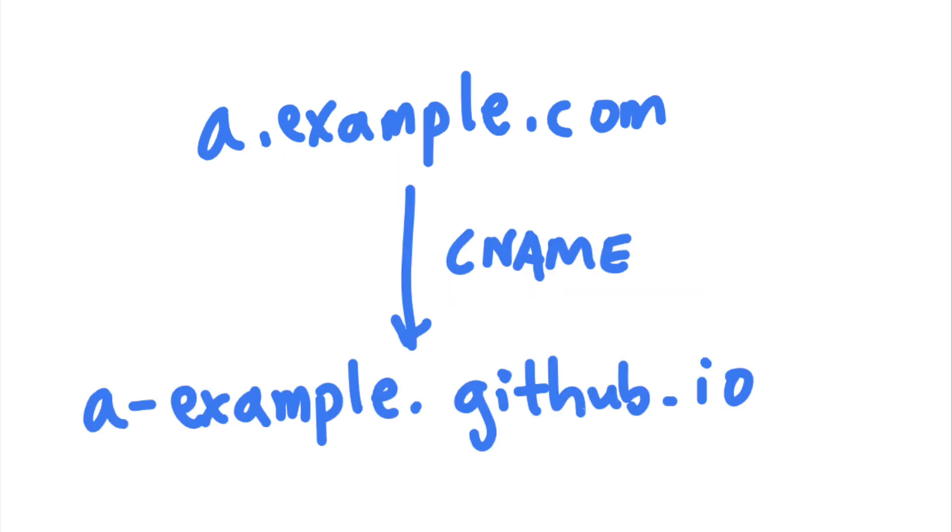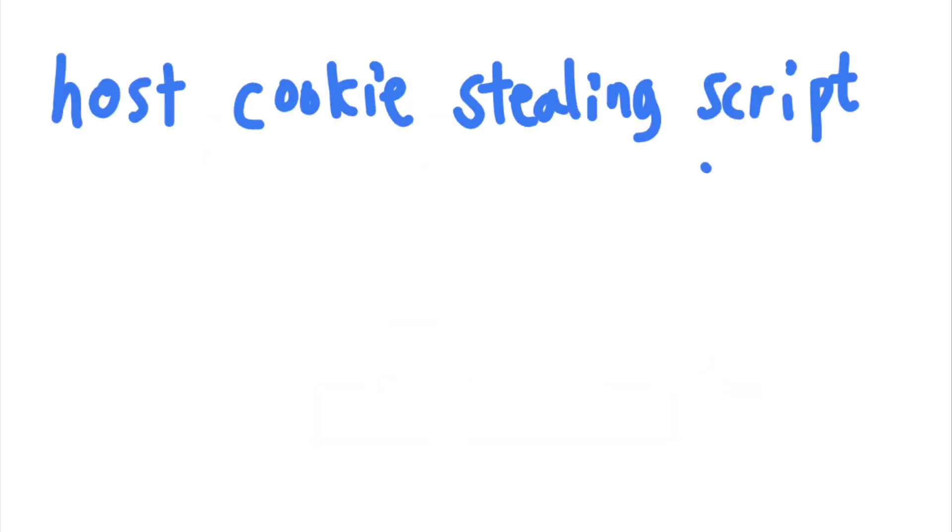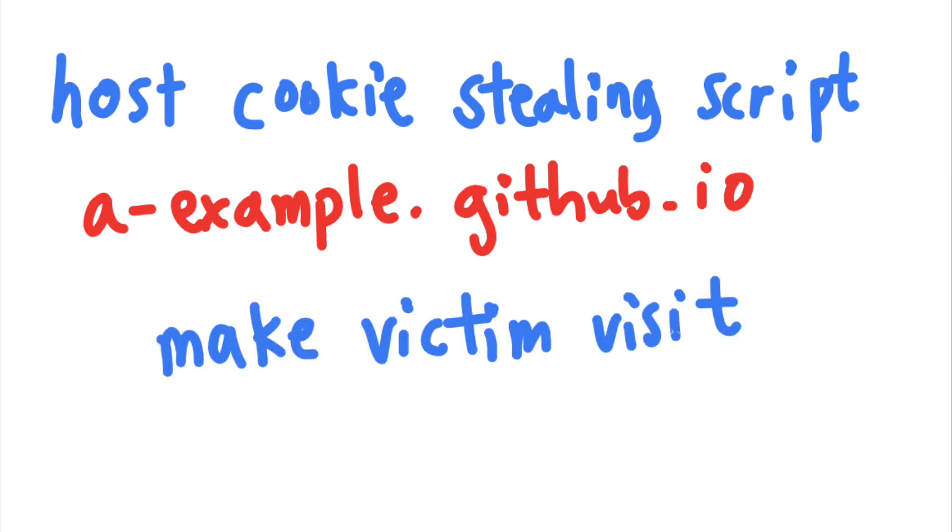In this case, attackers can take over the GitHub page and host a malicious script there to steal session cookies. They can then trick users into accessing the compromised subdomain by hosting it as a fake image or sending the link over to the user.